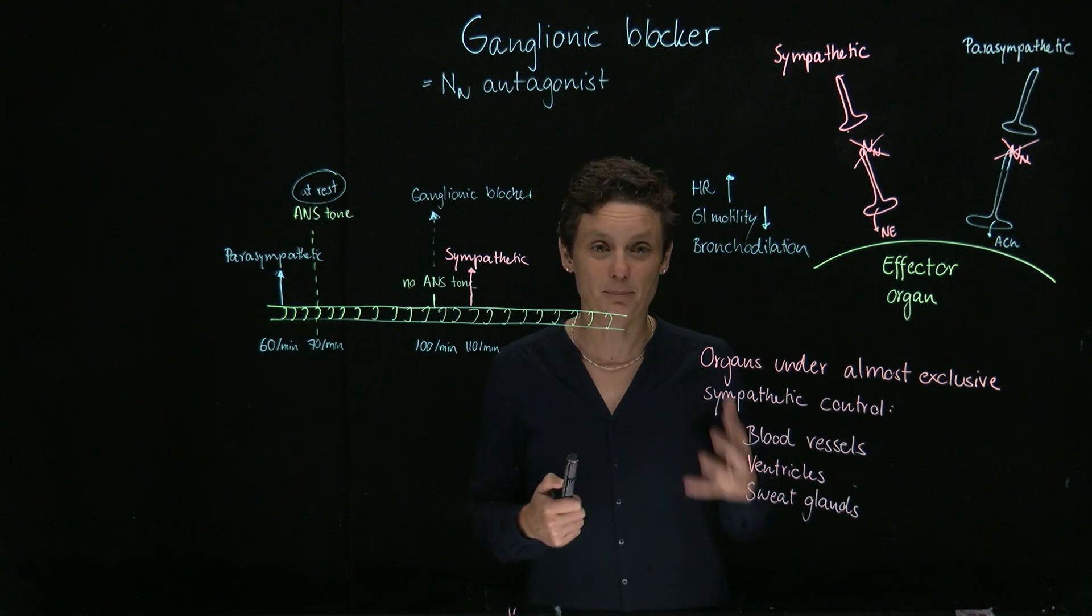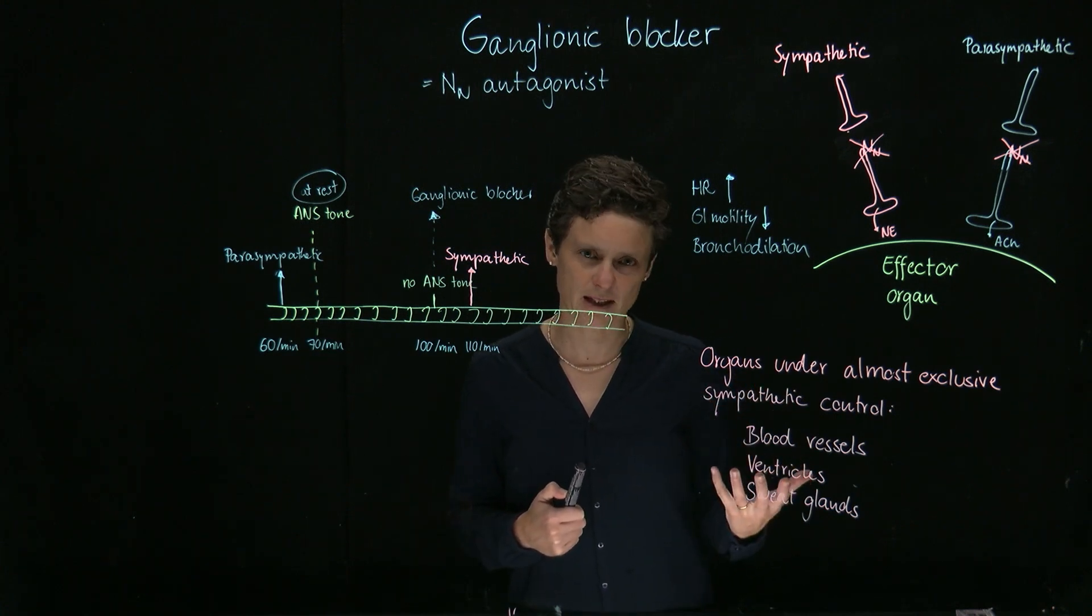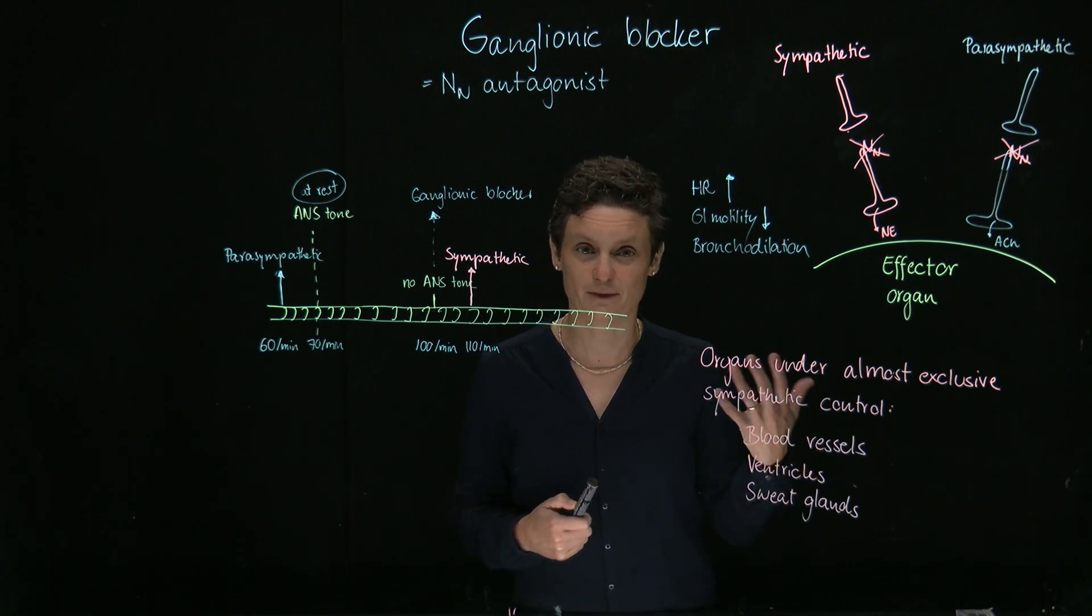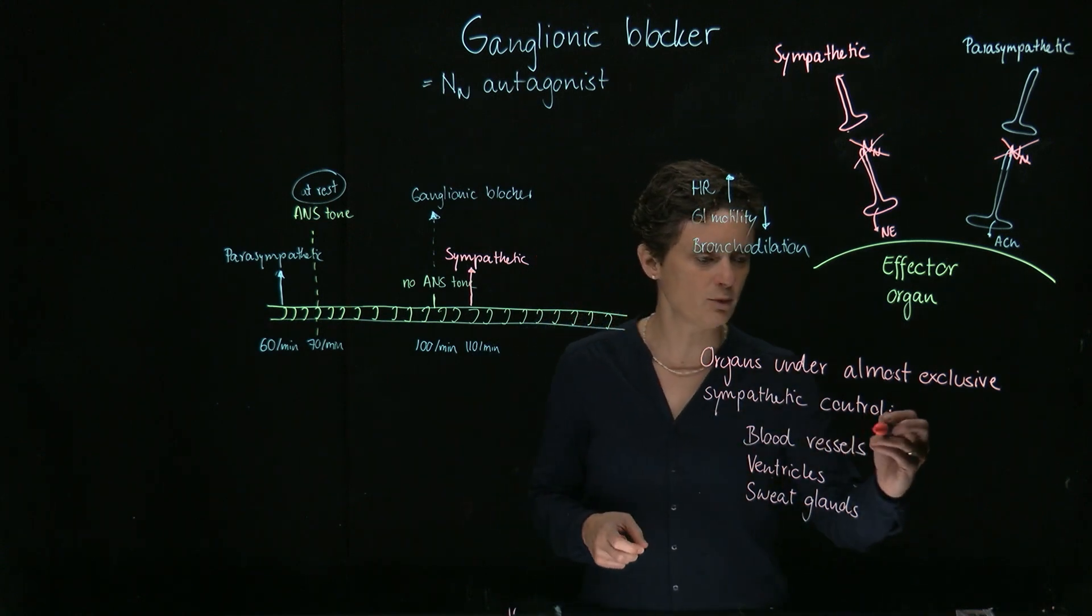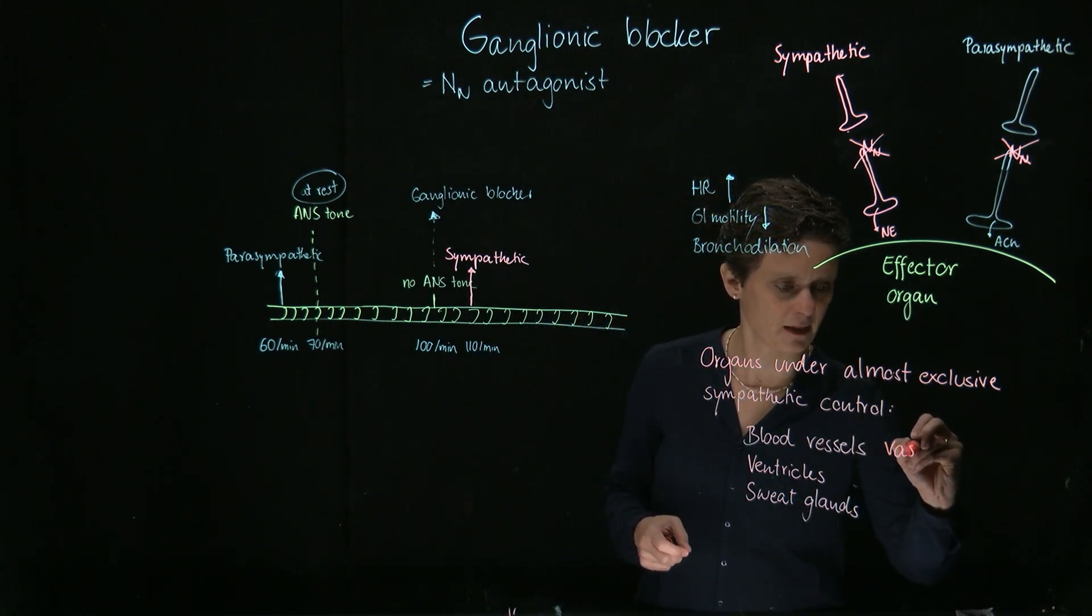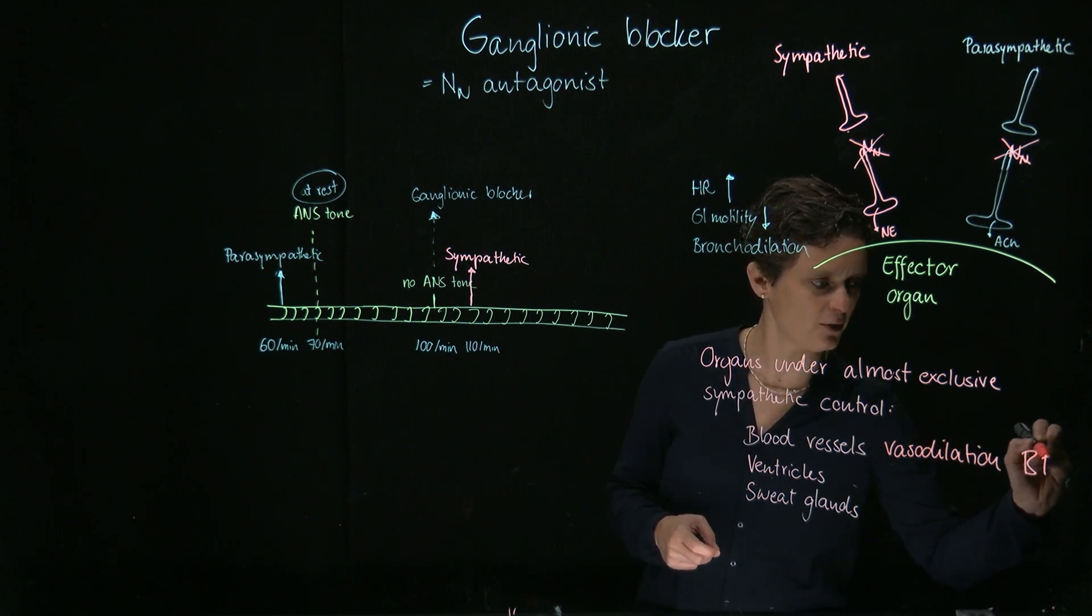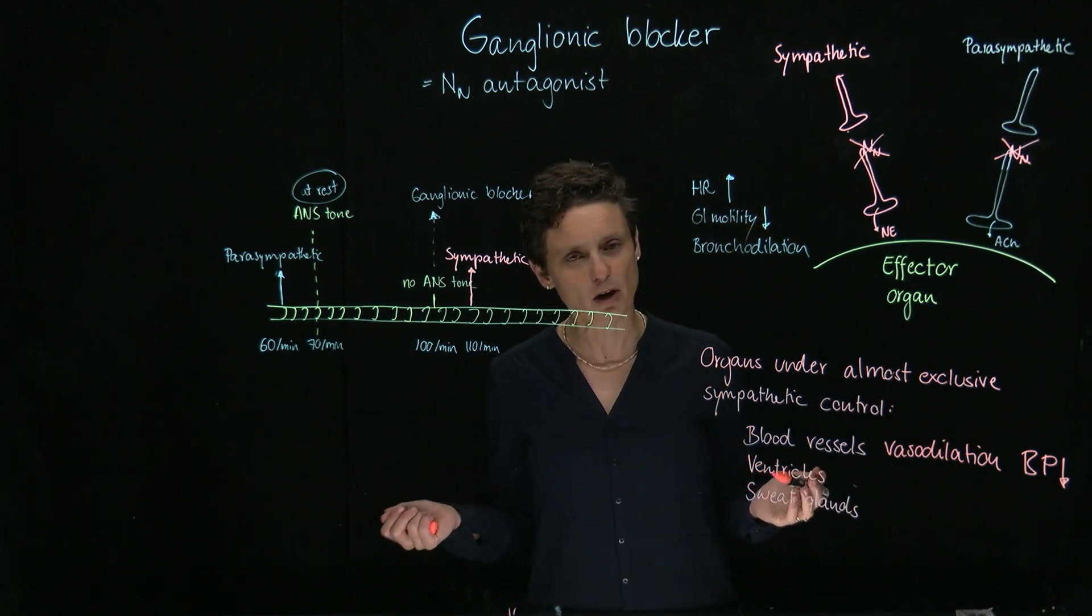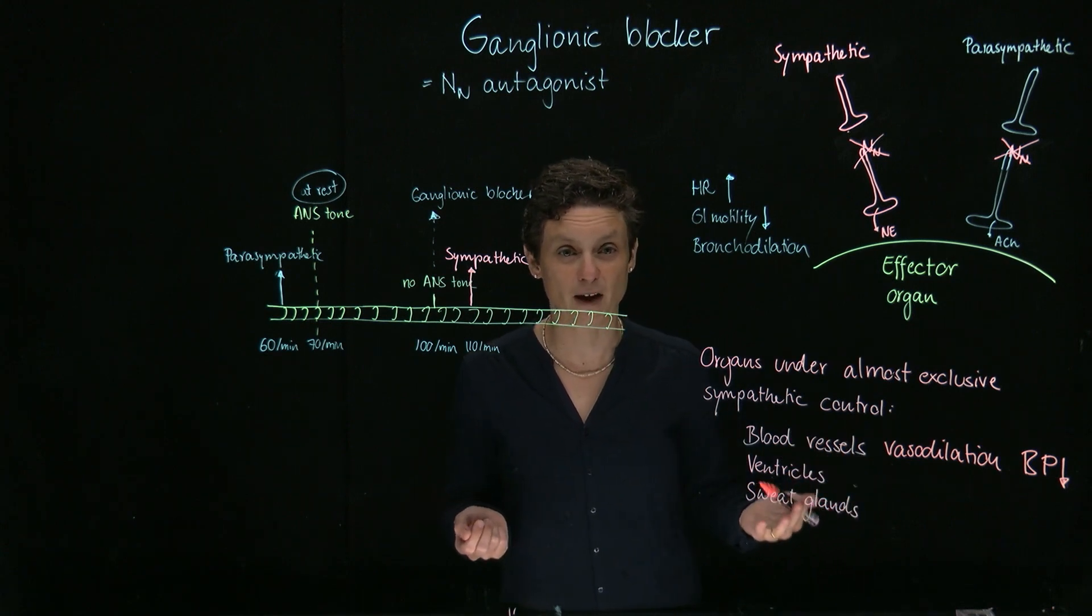Number one are the blood vessels. Blood vessels are exclusively under sympathetic control. The neuronal tone is vasoconstriction, and therefore, if you block it, we get vasodilation. So our blood vessels are going to dilate, and that's going to lead to a decrease in blood pressure. In fact, ganglionic blockers were one of the first medications ever used for the treatment of hypertension.